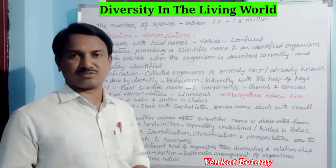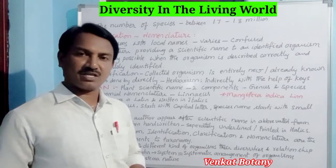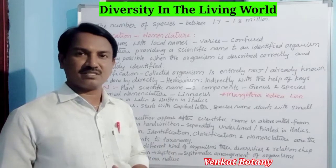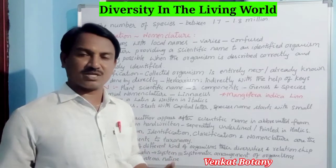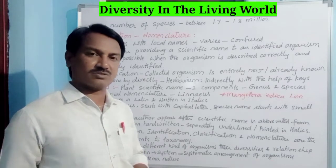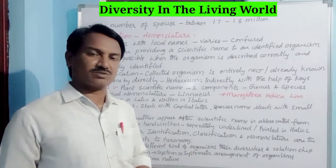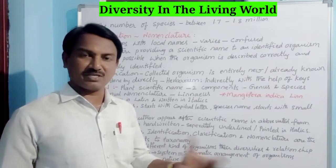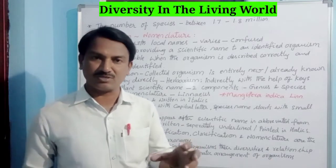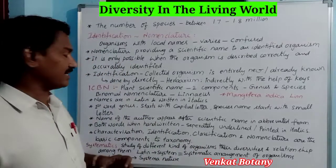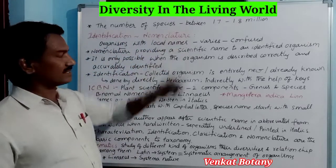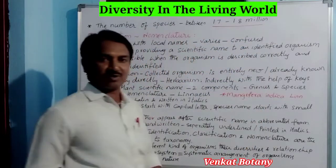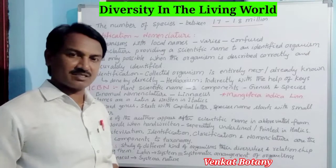Diversity of the Living World — diversity means different organisms are present surrounding us. We will talk about different organisms: plants, animals, and various species. We will talk about biodiversity. The number of species on the earth is between 1.7 to 1.8 million organisms.